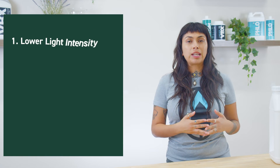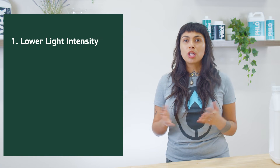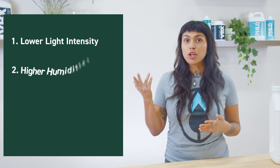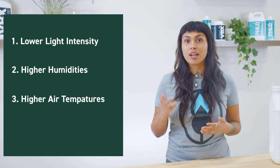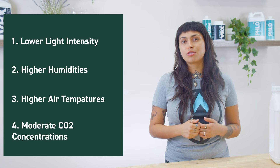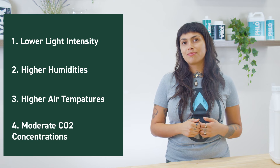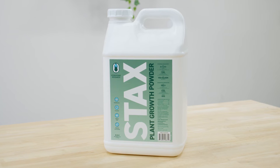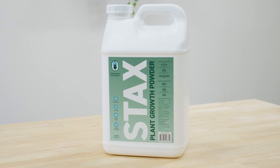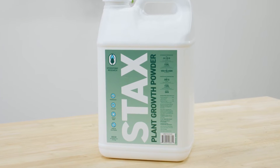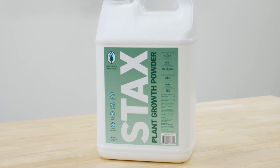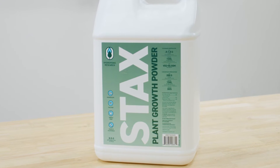Environmental conditions that promote vegetative steering include lower light intensity, higher humidities and air temperature, and moderate CO2 concentrations. Use stacks in conjunction with your appropriate base to provide ideal nutrition and leverage a stronger vegetative response.